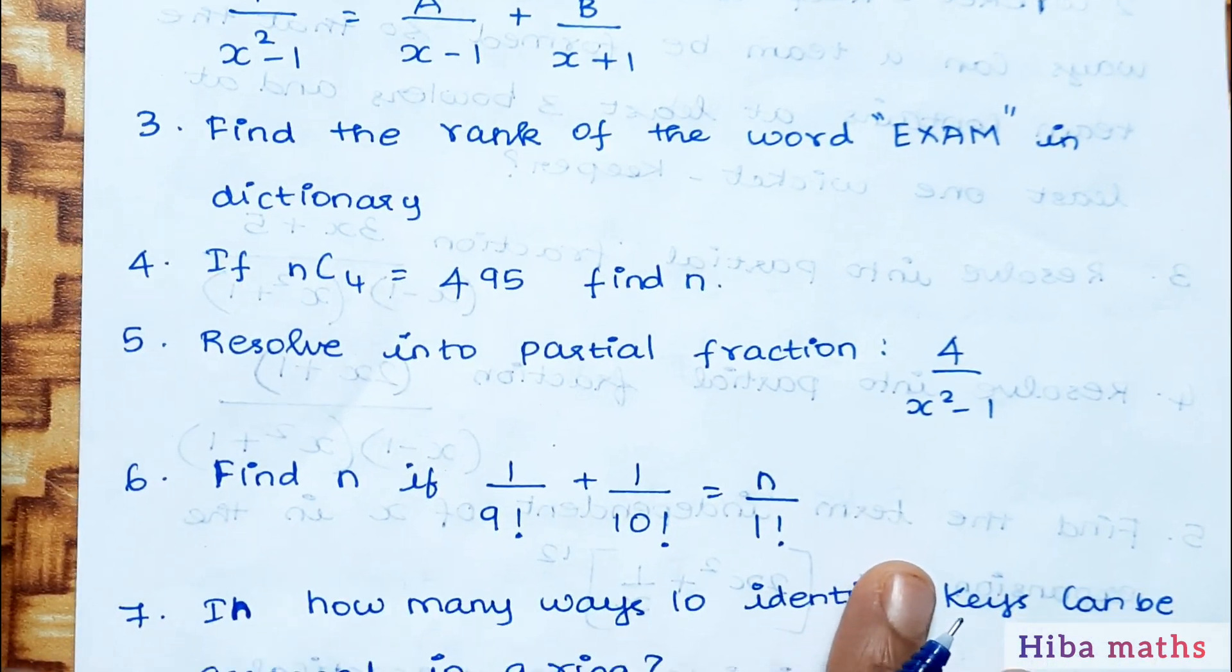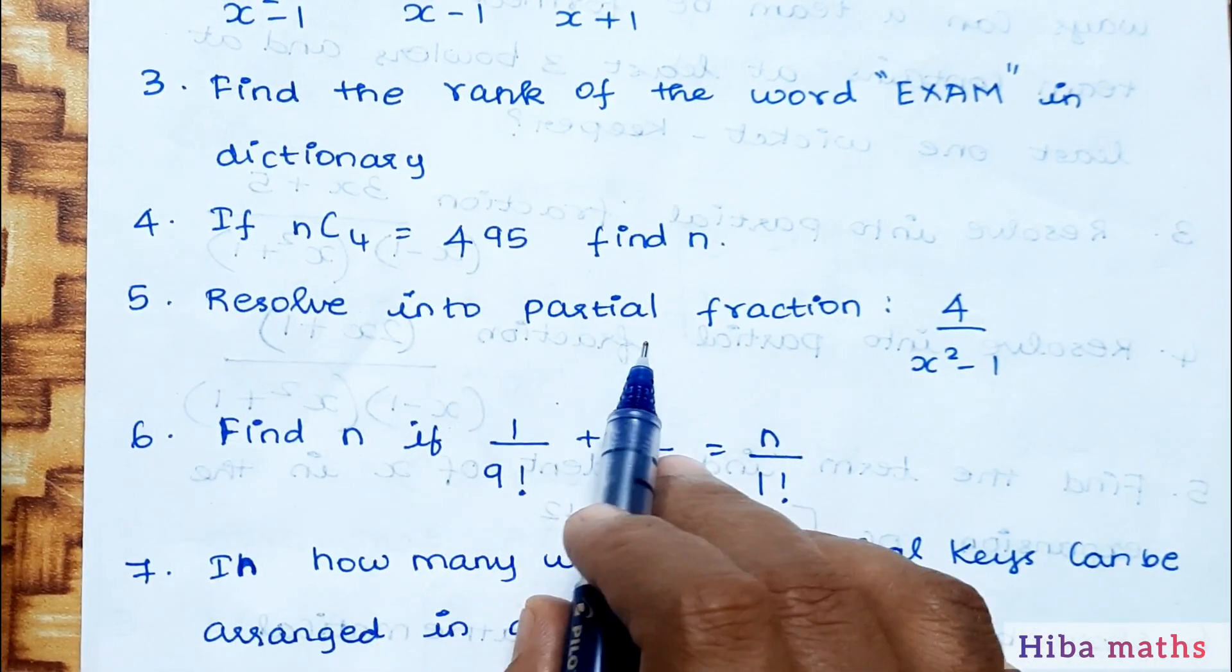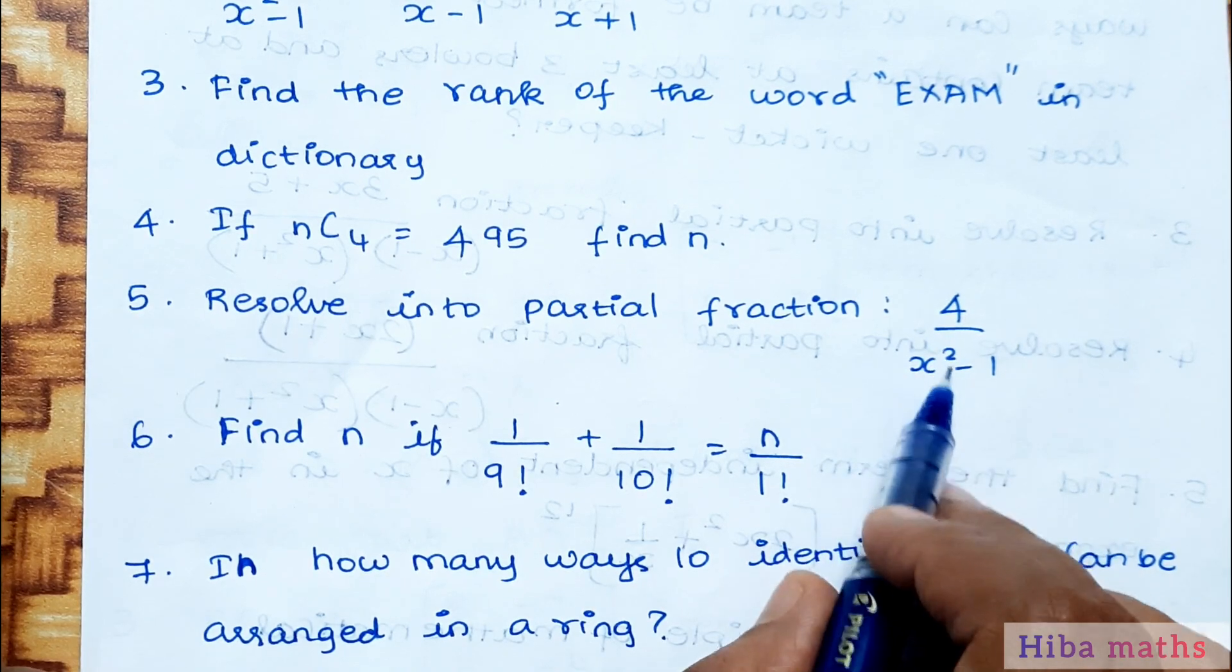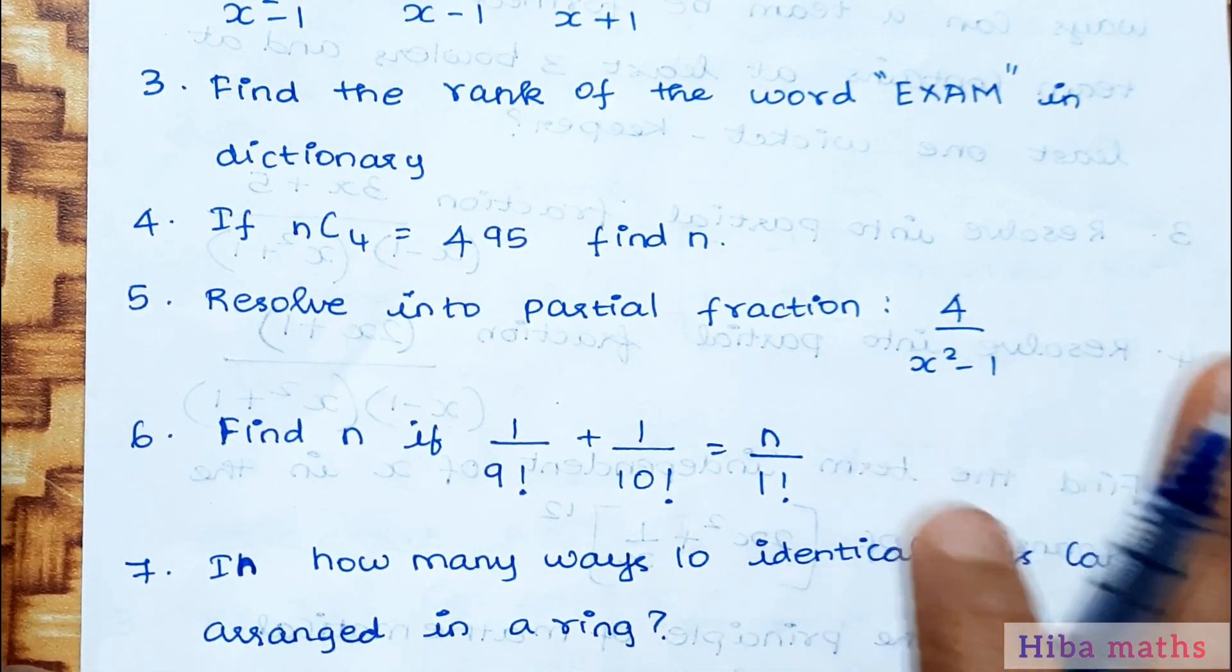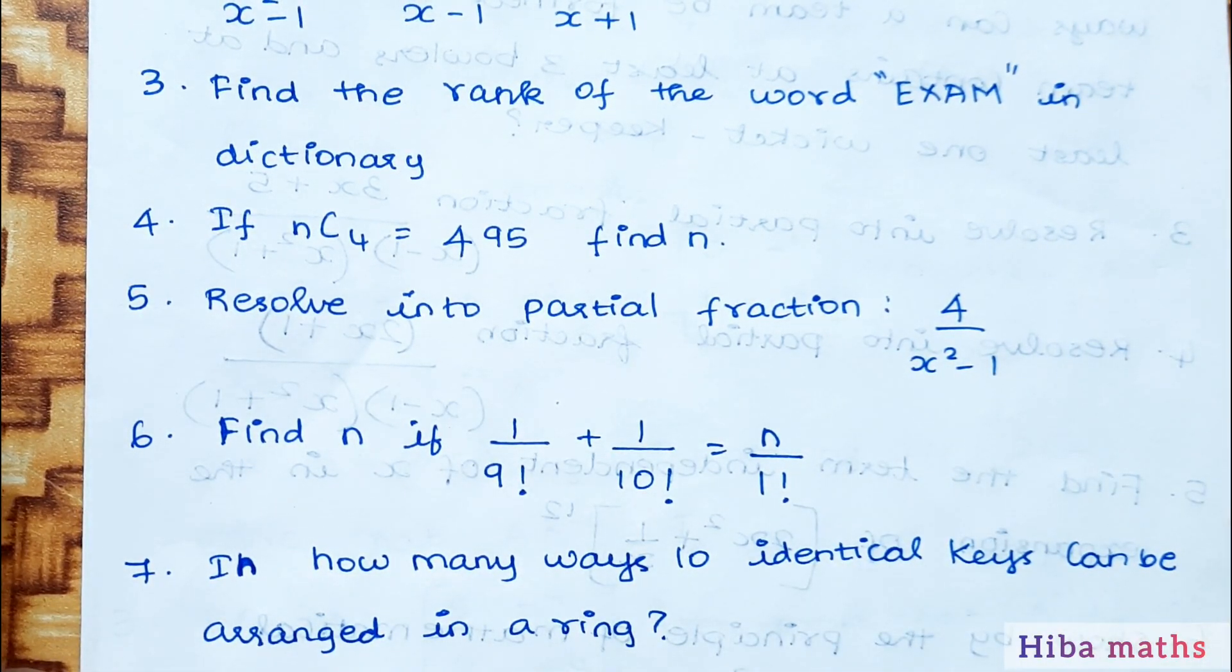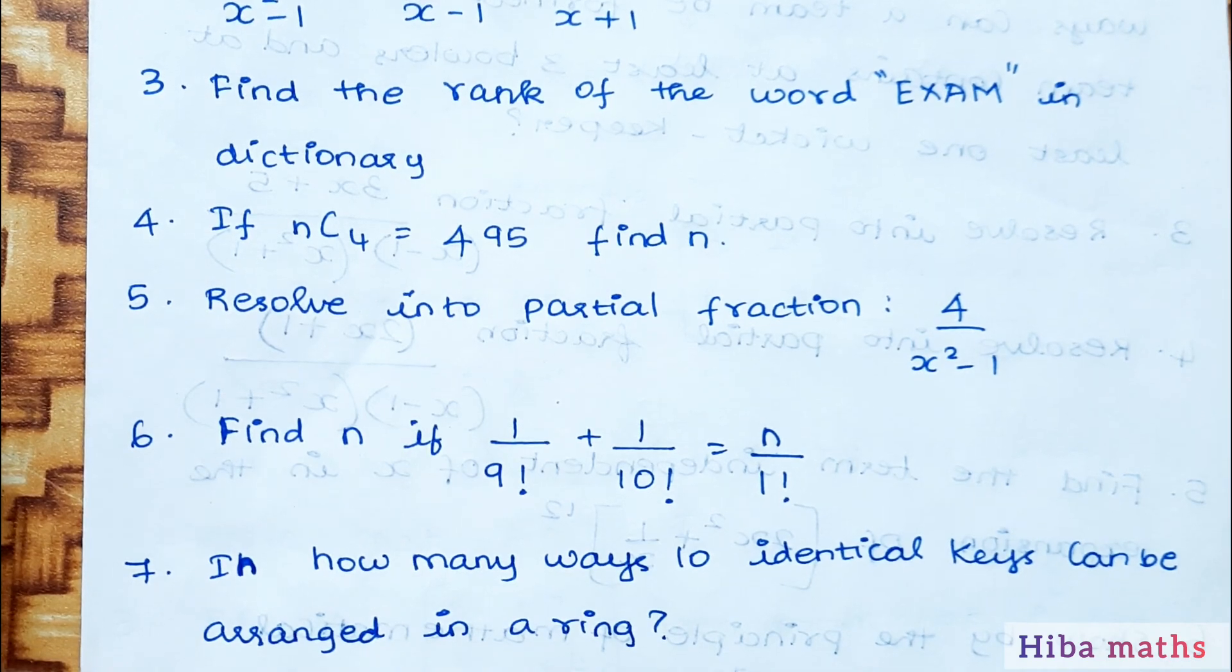Fifth question: resolve into partial fraction 4/(x²-1). So x²-1 can be split as a²-b² which is (a+b)(a-b).